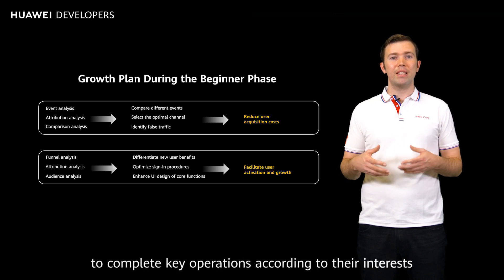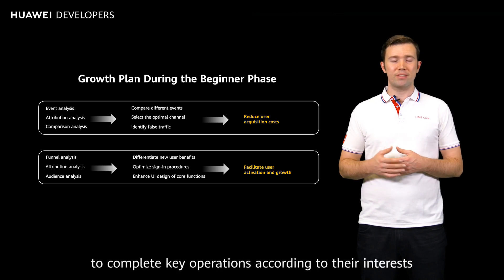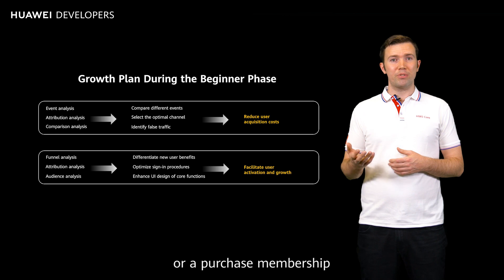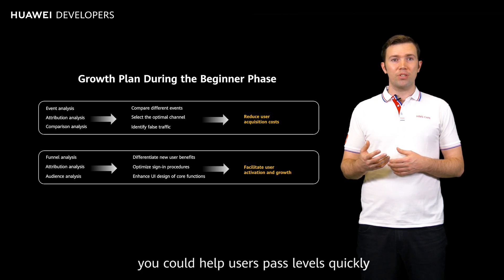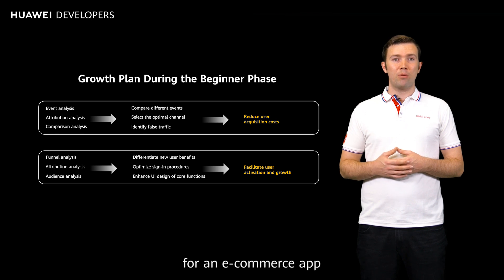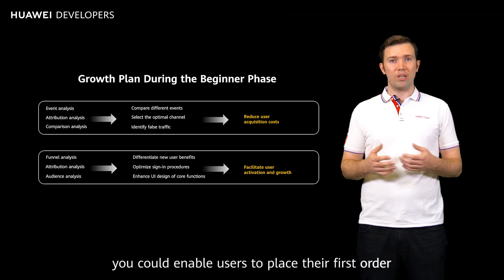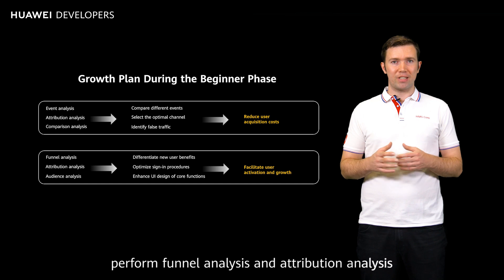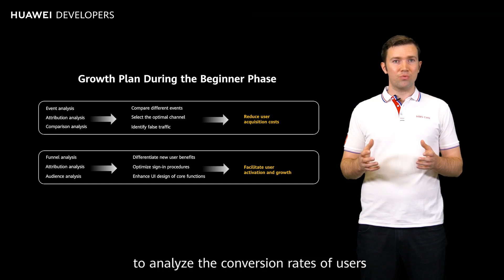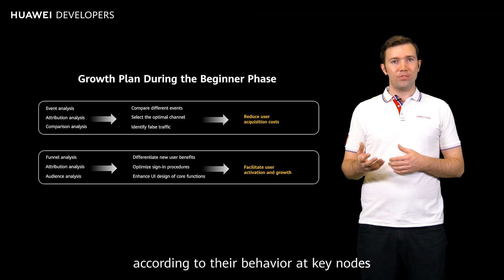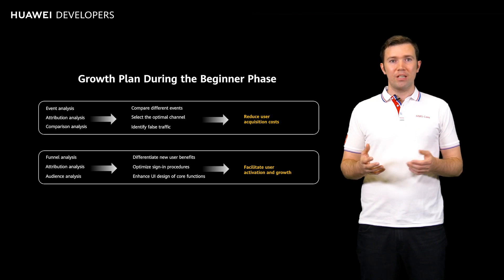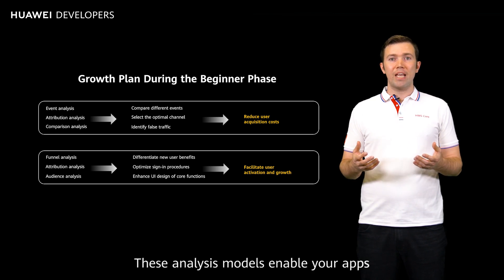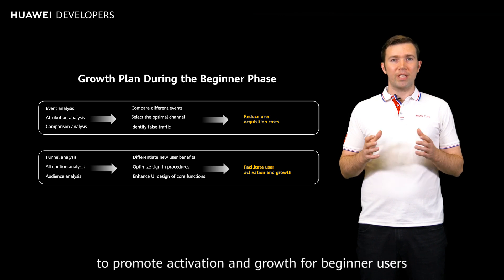You can also guide beginner users to complete key operations according to their interests. For example, if you have a video app, you could guide users to watch videos or purchase membership. For a game app, you could help users pass levels quickly. For an e-commerce app, you could enable users to place their first order within a short period of time. Then perform funnel analysis and attribution analysis to analyze the conversion rates of users according to their behavior at key nodes, and you'll be able to optimize the processes, provisioning modes, and UI designs for individual nodes. These analysis models enable your apps to promote activation and growth for beginner users.